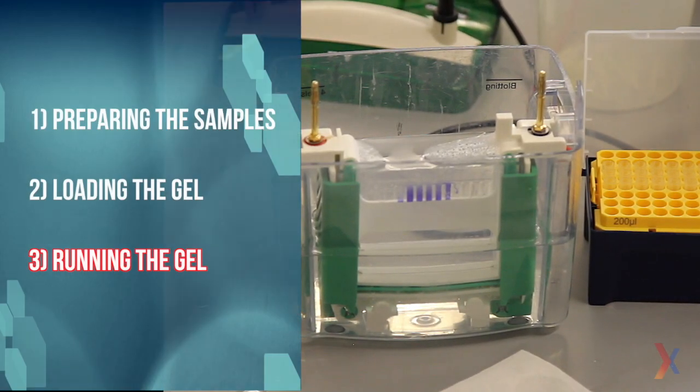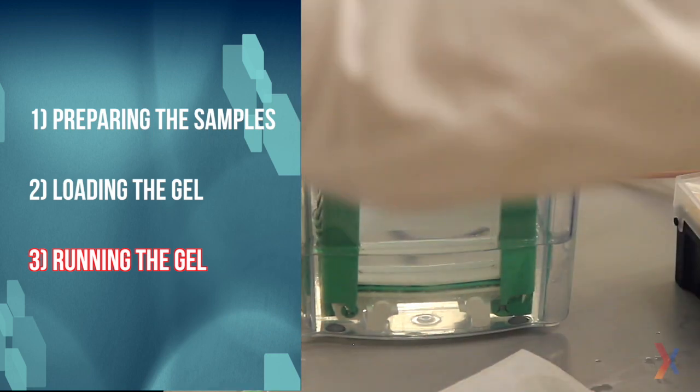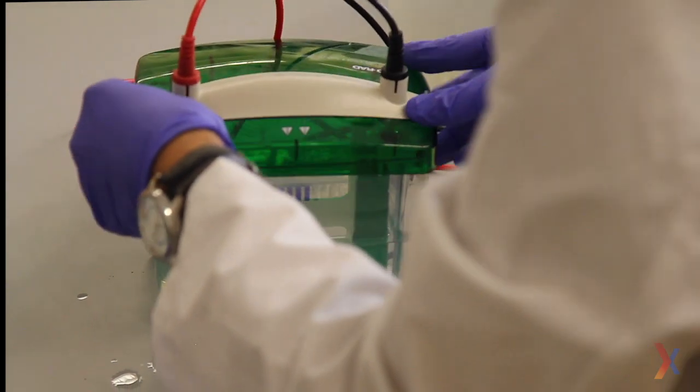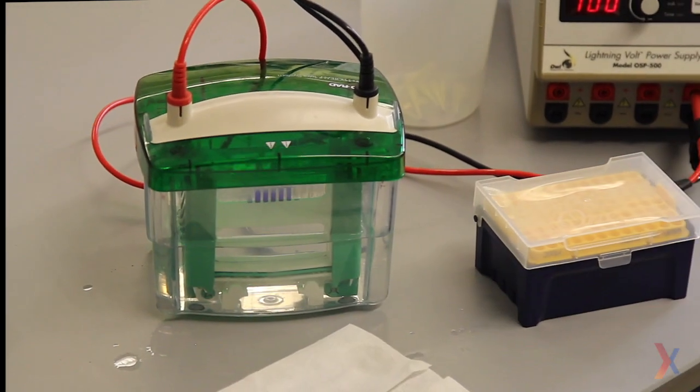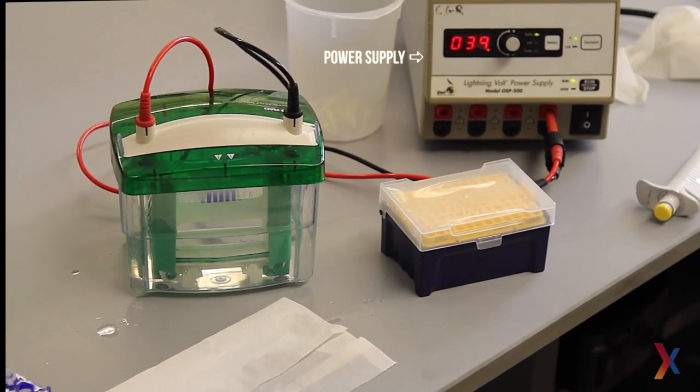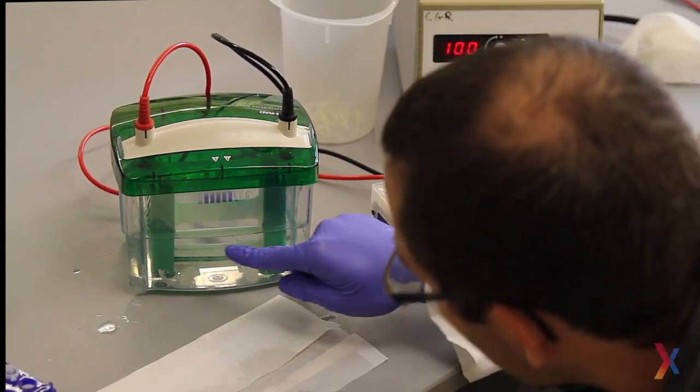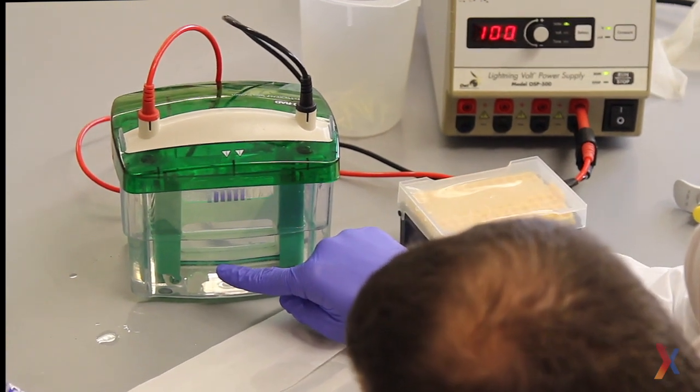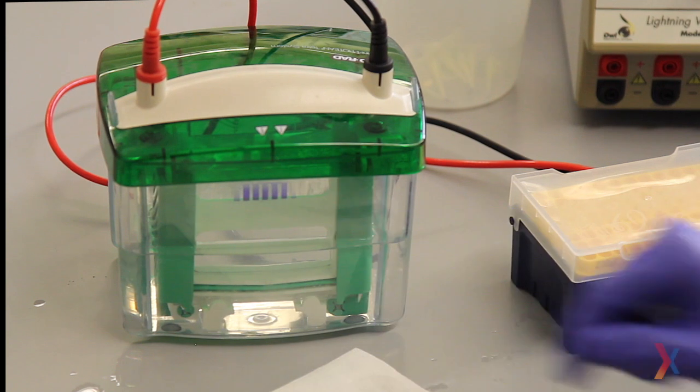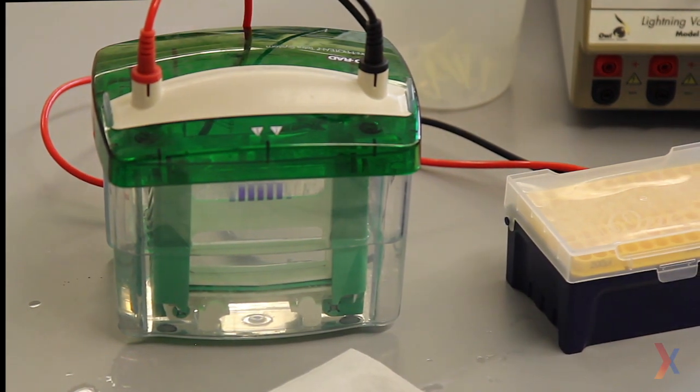Now that all four samples are added, I can add the lid, making sure to connect red to red. It's already connected to the power supply set to 100 volts. I will hit run. Check for bubbles coming up. If there are no bubbles, it means the gel is not running, but since I do see bubbles, it means the gel is running and I will now let it go for about one hour.